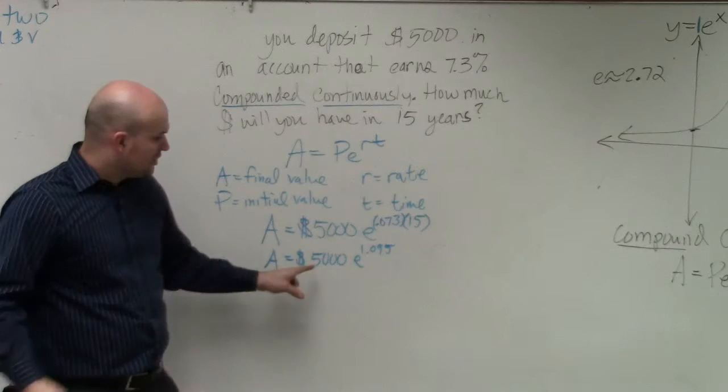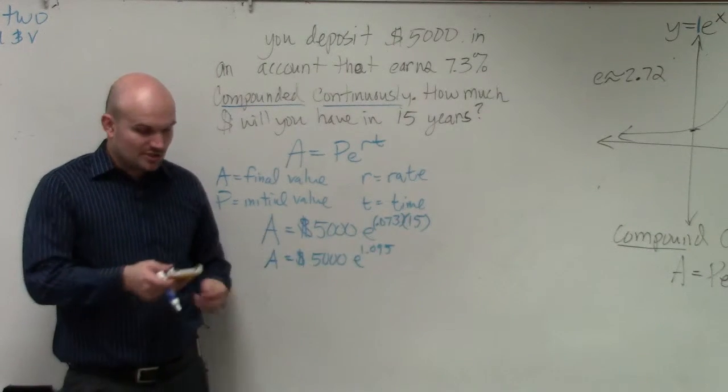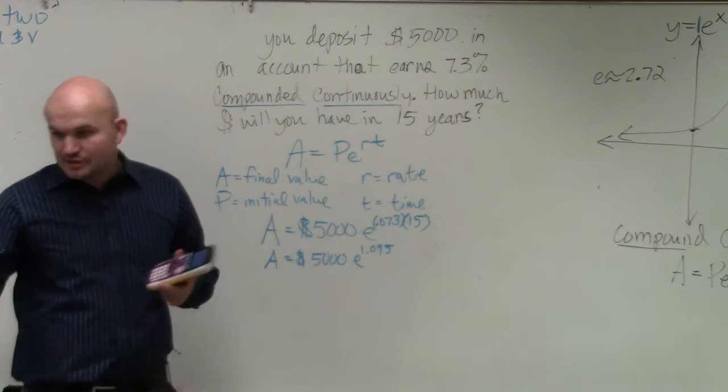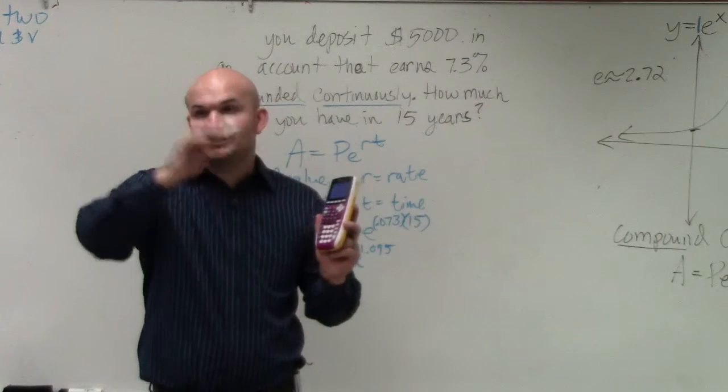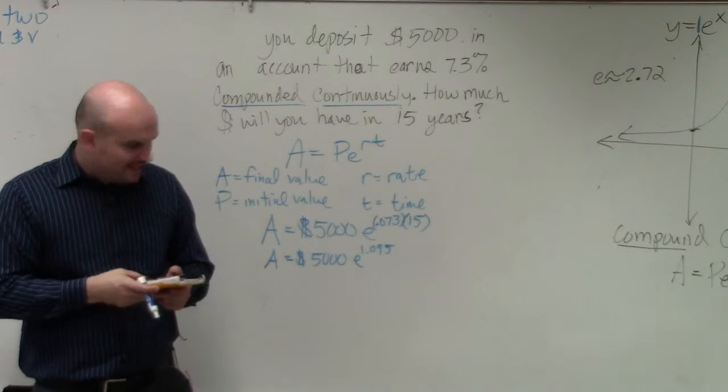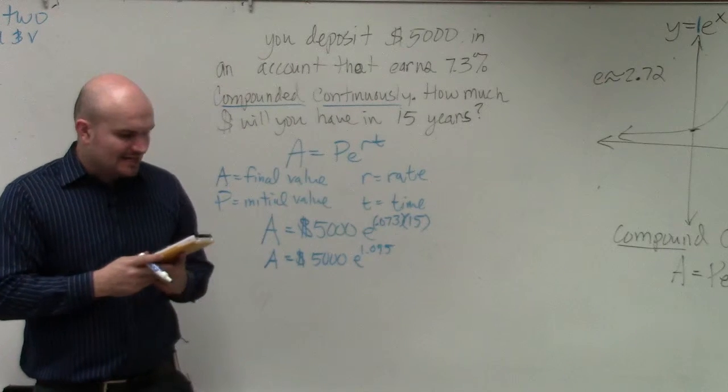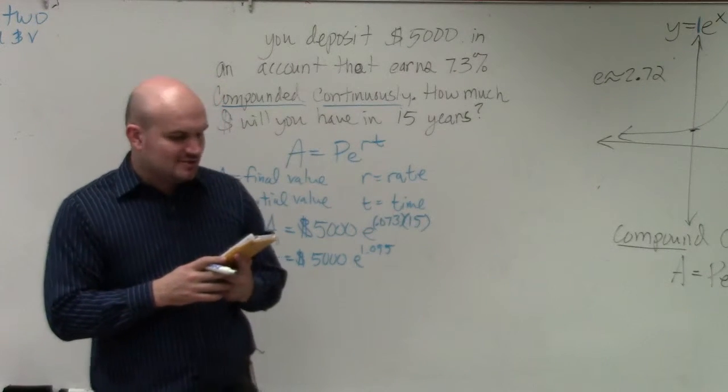Now, I don't want to multiply 5,000 times e. I've got to take e and raise it to the 1.095. So you guys, in your calculator, you guys will have e. It usually has an e to an x or e with a caret. So you're going to want to use e here. So I'll do e raised to the 1.095, and I get 2.989182683.